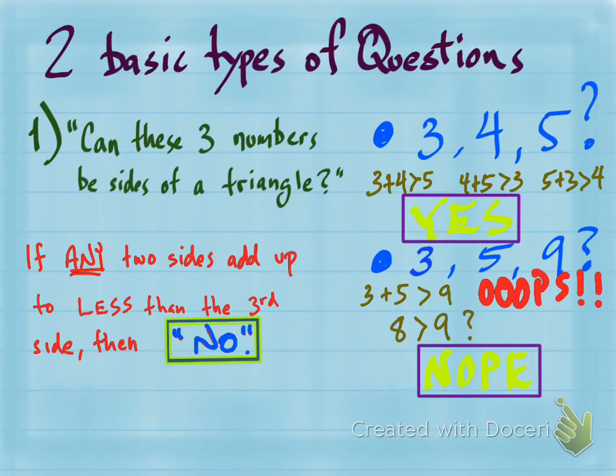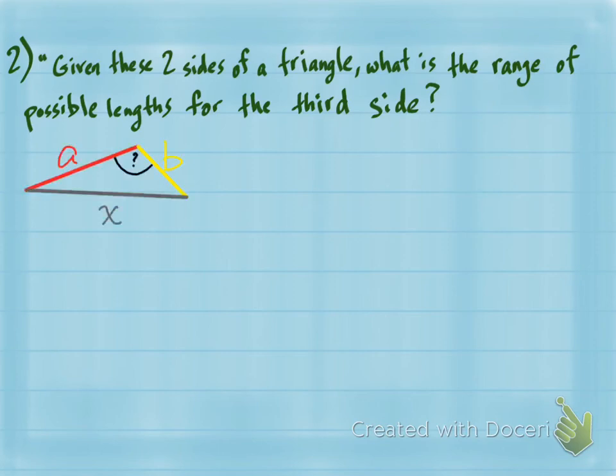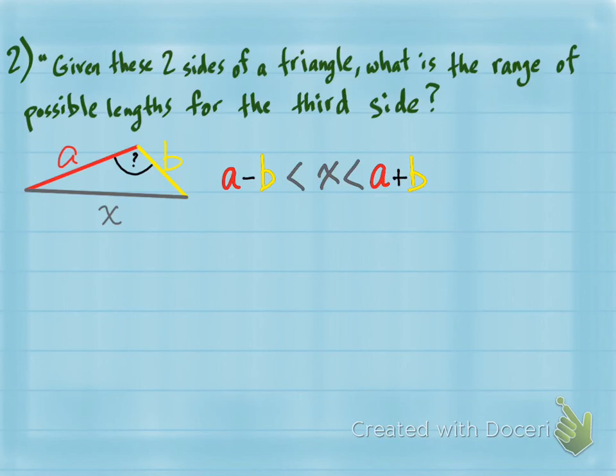The other kind of question is: given two sides of a triangle, what is the range of possible lengths for the third side? That phrase 'range of possible lengths' tends to throw people off. In general, if a triangle has two sides a and b, the third side X must be a number between a minus b and a plus b. That's how you find the range of possible lengths.